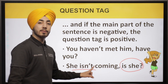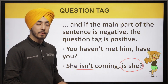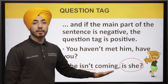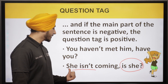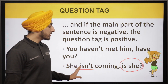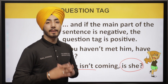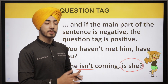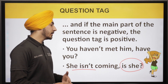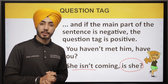A statement alone is not a question tag — it only becomes one when we put it at the end of the sentence after a comma. So 'She isn't coming' becomes 'She isn't coming, is she?' Similarly we can use 'did he', 'isn't he', and so on. We put the question tags this way at the end.